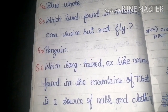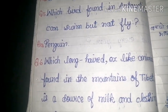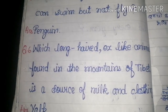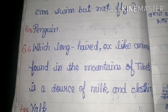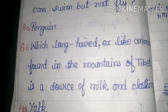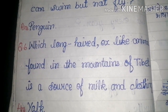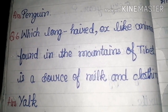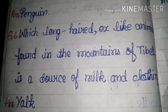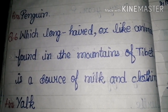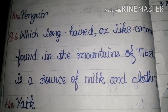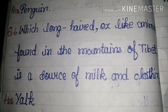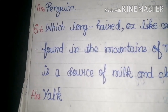Question number 6: which long-haired, ox-like animal is found in the mountains of Tibet? This animal is a source of milk and clothing. It is the size of an ox and is found in the mountains of Tibet. The answer to this question is the yak.